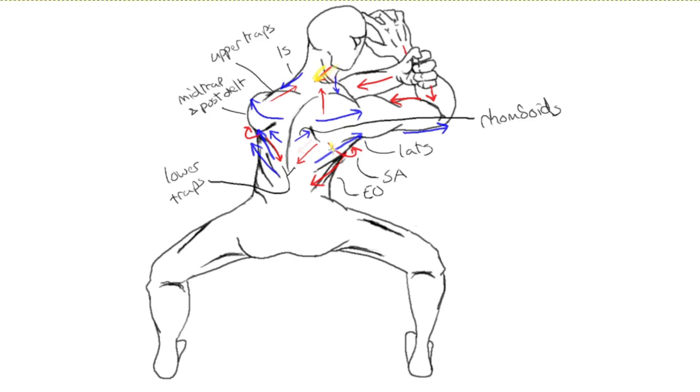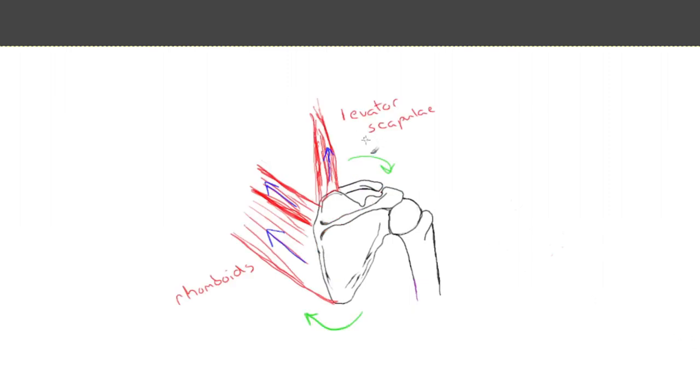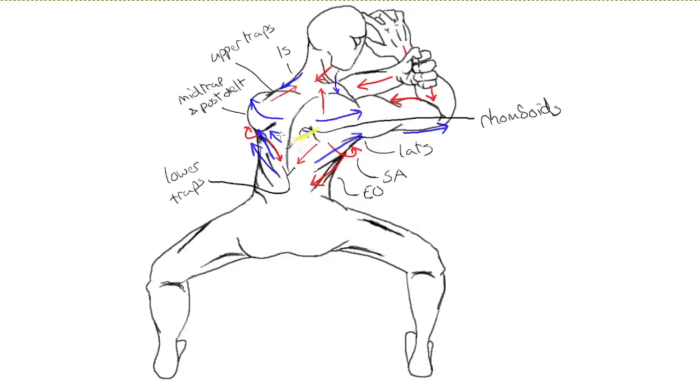So here we have serratus anterior, or the SA, the upper trapezius here, and the lower trapezius here. In contrast to that, all the muscles that rotate the scapula inward would now be stretched. So there would be the rhomboids here, the mid traps here are stretched, and the levator scapula here.